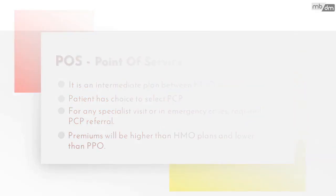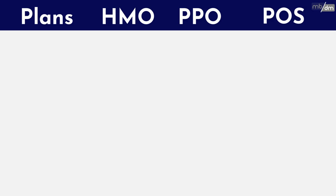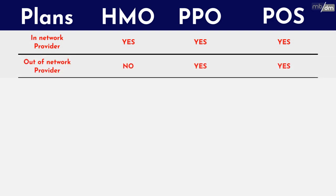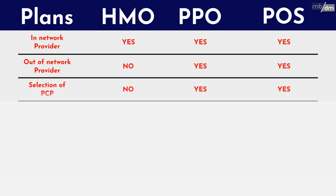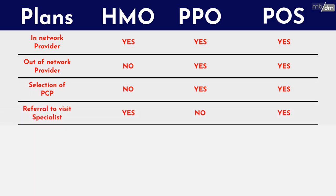Let's see the difference among these plans. All plans cover in-network providers. HMO does not cover out-of-network providers. POS covers out-of-network at high premiums. HMO plan does not allow the patient to select a PCP. No referrals are needed to visit any provider in PPO plans.